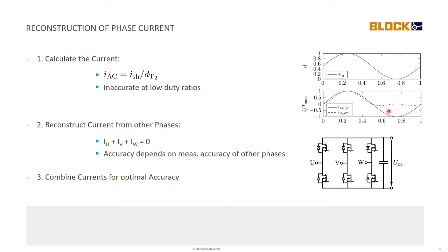And this is really somehow a problem for us because when we don't measure a current anymore, when the duty ratio is really low, we somehow have to get this current from somewhere else. But luckily we are in a three phase system and we know that all the three phases will always add up to zero.